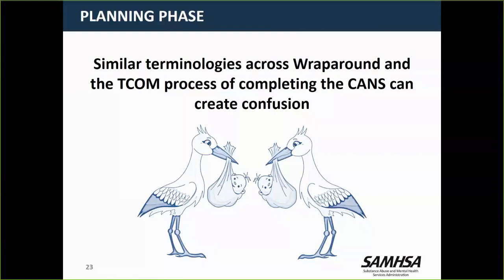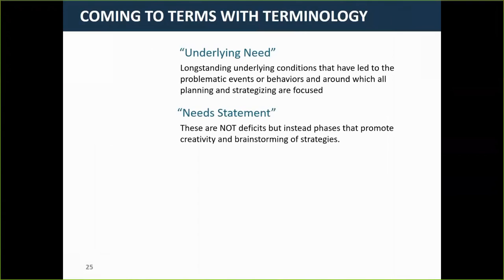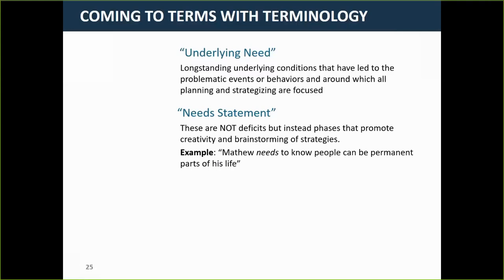Moving to the second phase of wraparound — the planning phase. One thing highlighted in the guidance document is that similar terminologies across wraparound and the TCOM/CANS process can create confusion. We've got to come to terms with terminology. When CANS and wraparound coexist in the same system, you've got the challenge of the same words being used on the surface for each. In wraparound, an underlying need is a longstanding underlying condition that's led to problematic events or behaviors, around which all planning and strategizing are focused — expressed in the family's words, with only one or two as the focus of intensive work at a time.